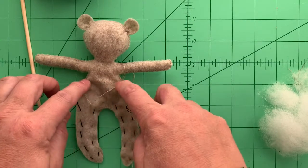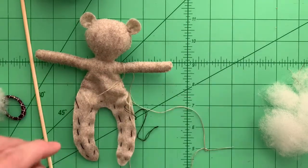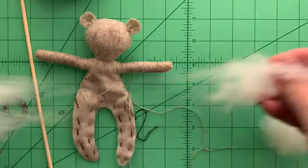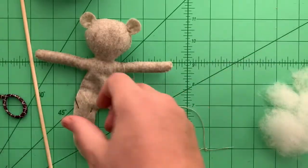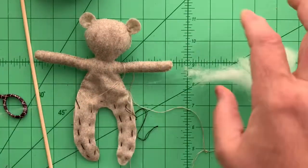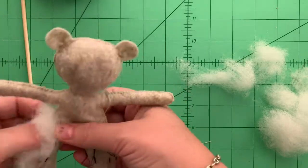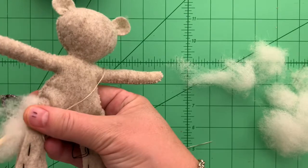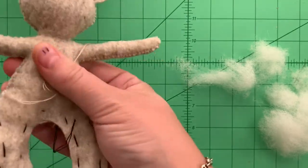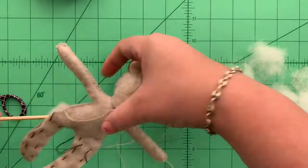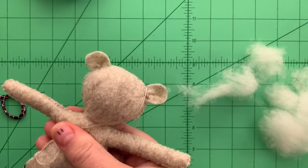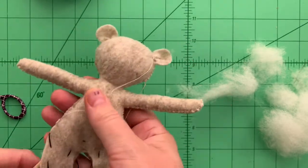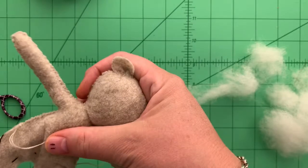You can kind of move the roving around so it's smoothed out. Now we're going to fill up the neck to about mid chest. You need to take some more roving, make little bits of it again here, and go in through the side here using the blunt end of the skewer, just shoving that up around into his neck.